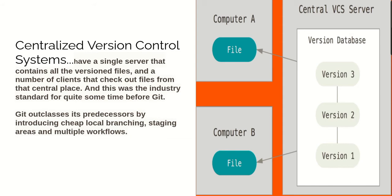With the centralized version control system, what is very common is that they have a single server that contains all the version files and a number of clients that check out files from the central place. Different from the decentralized version control system — with decentralized, you don't have clients checking out files from one place. You can check out files from your local machine. You don't have to have someone check out for you.